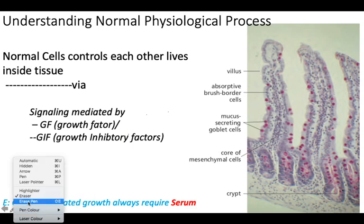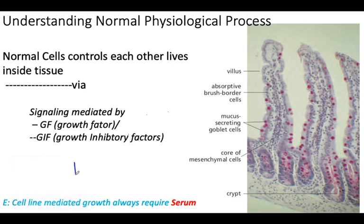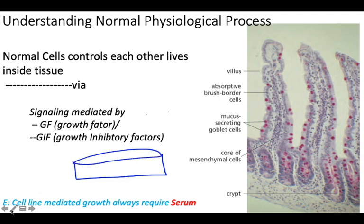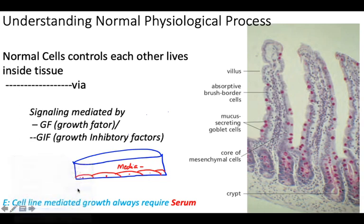How do these growth factors behave inside a petri dish? Suppose we have a cluster of cells in a petri dish. We need some media for their growth. It has been observed that irrespective of the presence of an appropriate media — containing amino acids, nutrients, glucose, etc. — there is one key ingredient which is a necessity to provoke cells to grow. This ingredient is called serum.